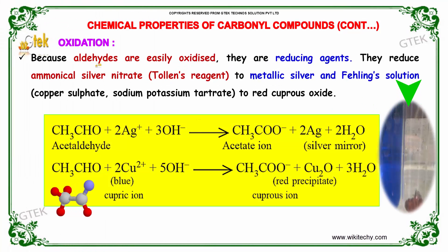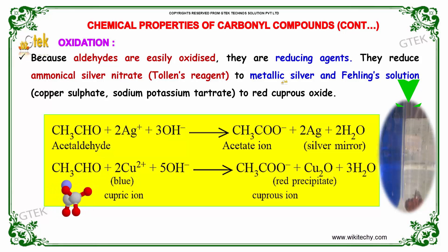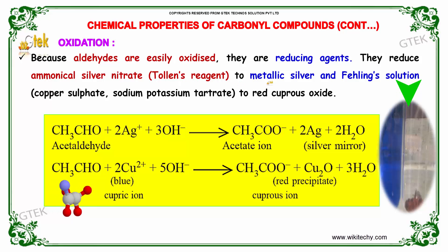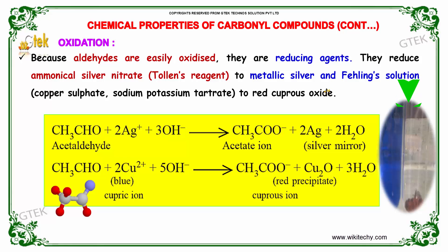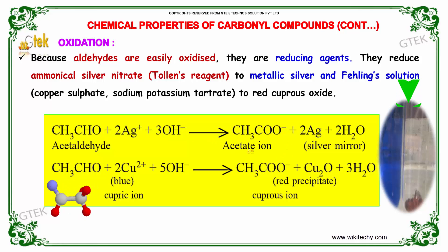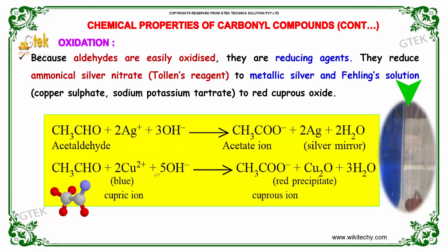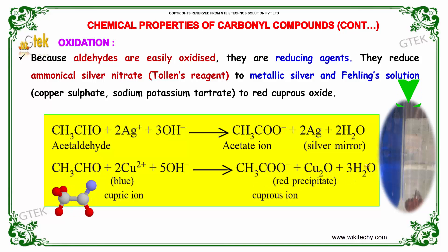Because aldehydes are easily oxidized, they are reducing agents. They reduce silver ammonium nitrate — that is, Tollens reagent — to metallic silver, and Fehling's solution to red cuprous oxide. Acetaldehyde when reacted with Ag⁺ and OH⁻ produces the acetate ion along with the silver mirror. When reacted with cupric ion along with 5 OH⁻, it produces a red precipitate along with water.